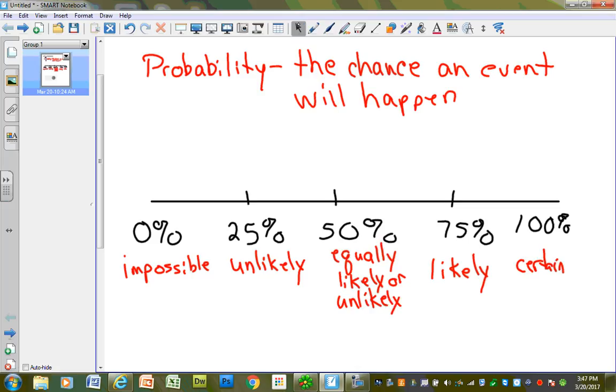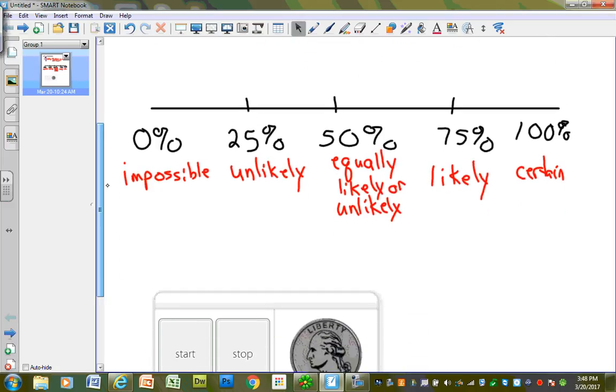We'll talk about this in a few minutes. That's flipping a coin. Is it as equally likely to get heads as you are tails? Now there's other percents, obviously. Anything close to 25%, we'd say is unlikely. Anything close to 50%, we'd say is equally likely or unlikely. Something that's pretty close to 75%, we would say is likely. Good chance of it happening. If there's a 75% chance it's going to rain, it's probably going to rain. Now, there's still that chance it won't, but it's pretty darn sure.